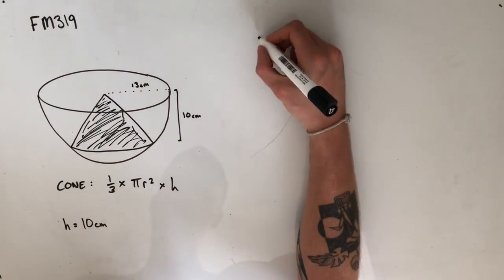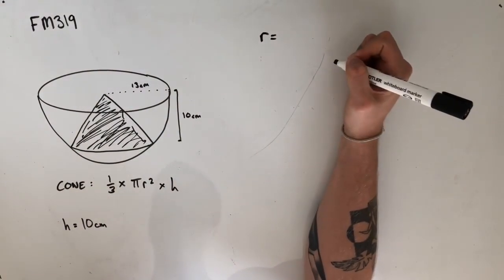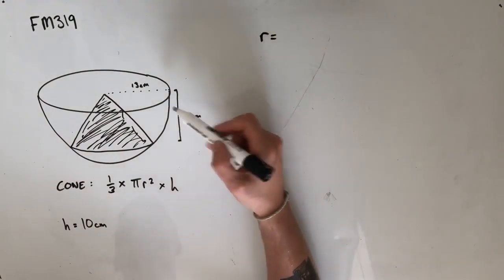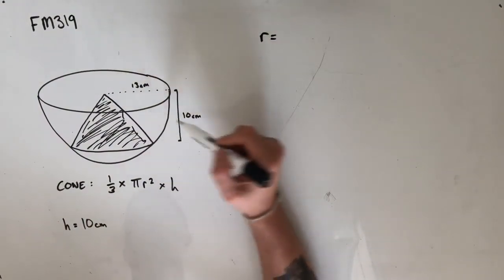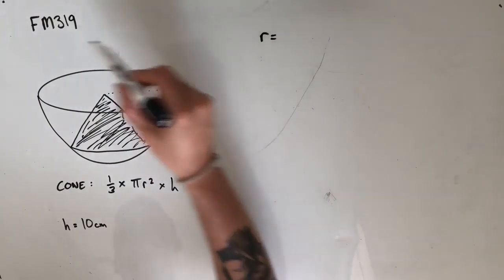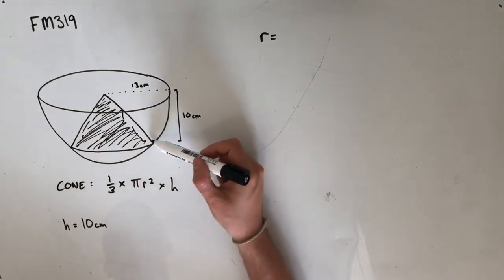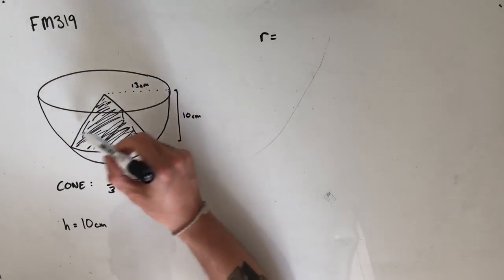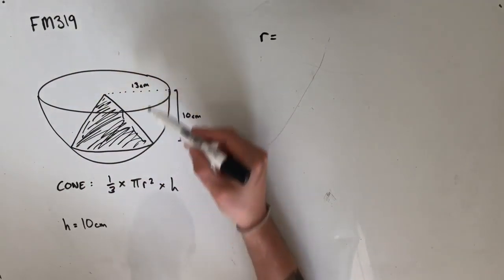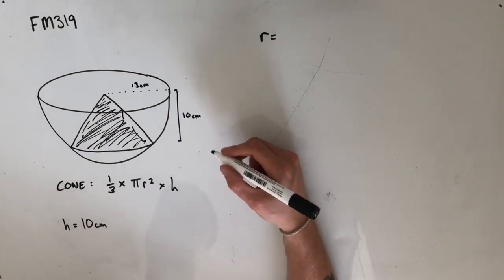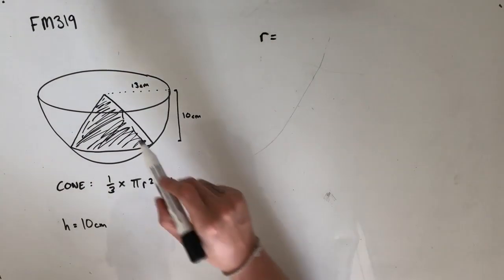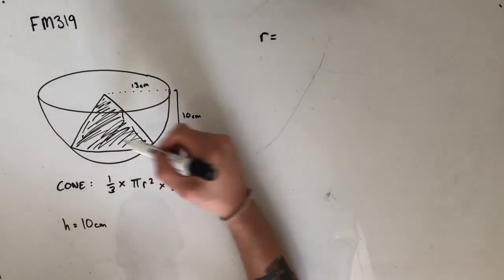However, the radius ends up being a little more tricky than you might think. A lot of students will run into a problem where they mistake the radius as being 13 centimetres because that was the radius of the bowl. But the radius of this smaller circle is actually going to be much smaller than 13 centimetres. So we need to be able to figure out what that radius is going to be.